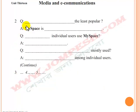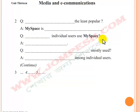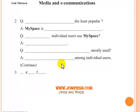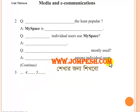Number two. Question: Which social network is least popular? Answer: MySpace is least popular. Question: How many individual users use MySpace? Answer: 6 crores, 10 lakhs and 36,000 users use MySpace. Question: Which social networking service among individual users is mostly used? Answer: Facebook is mostly used among individual users.